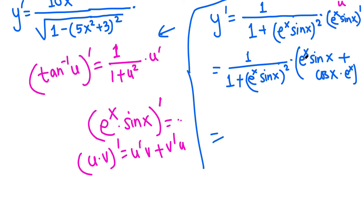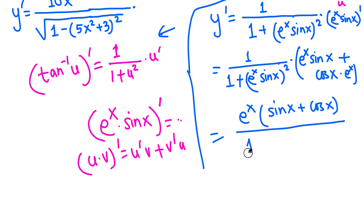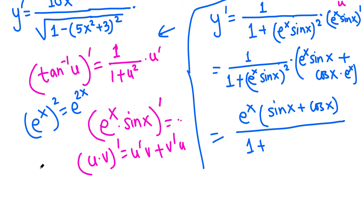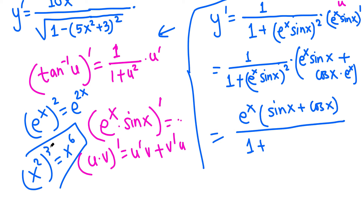That expression goes on top. We can factor eˣ out of the two terms to simplify. For the denominator: 1 plus (eˣ)² — note that eˣ squared means you multiply the exponent, giving e to the 2x, not e to the x squared. And sin x quantity squared means sin squared x. So the final answer has e²ˣ and sin²x in the denominator.